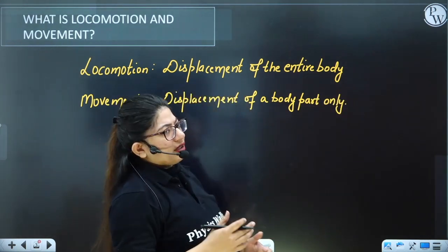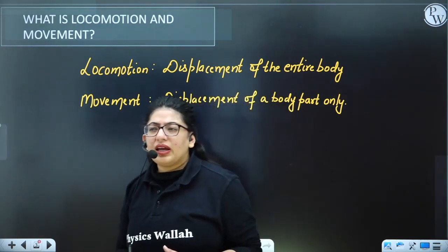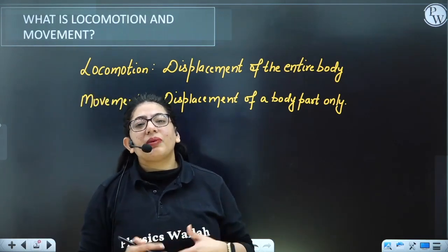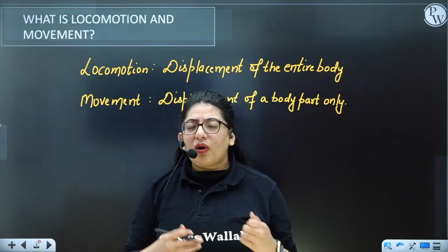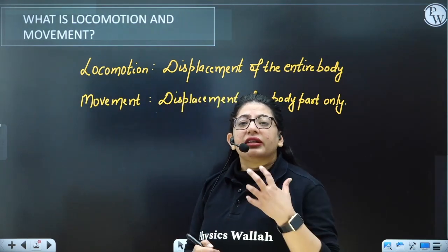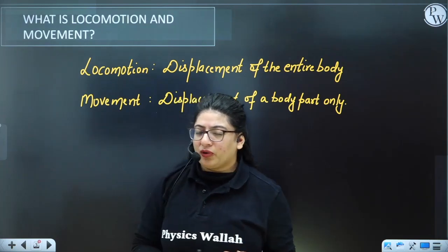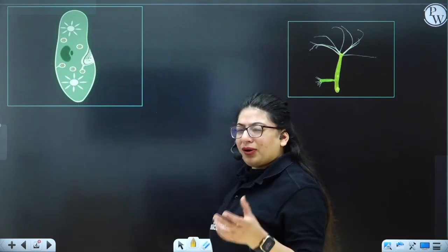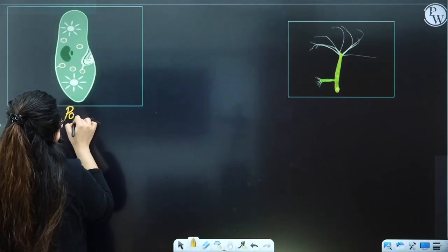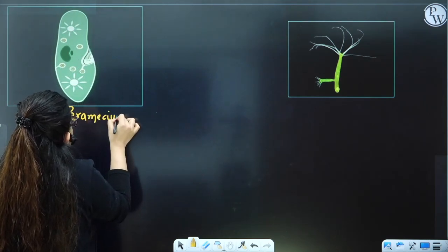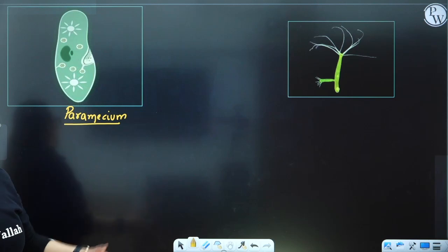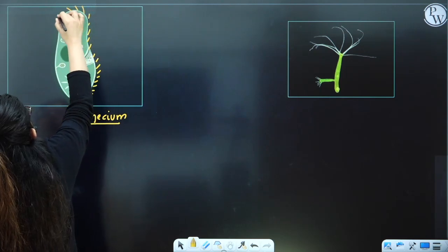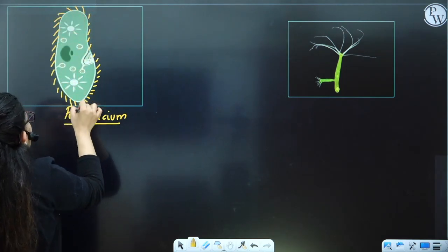In the entire animal kingdom, locomotion and movement take place by different means. For us, our muscles and skeletal system work together to move the body. If I talk about a lower organism like paramecium, it has cilia all around the body. This cilia helps paramecium to locomote — to move from one place to another. Also, cilia are present in its cytopharynx, through which food enters, and these cilia help move the food inside.